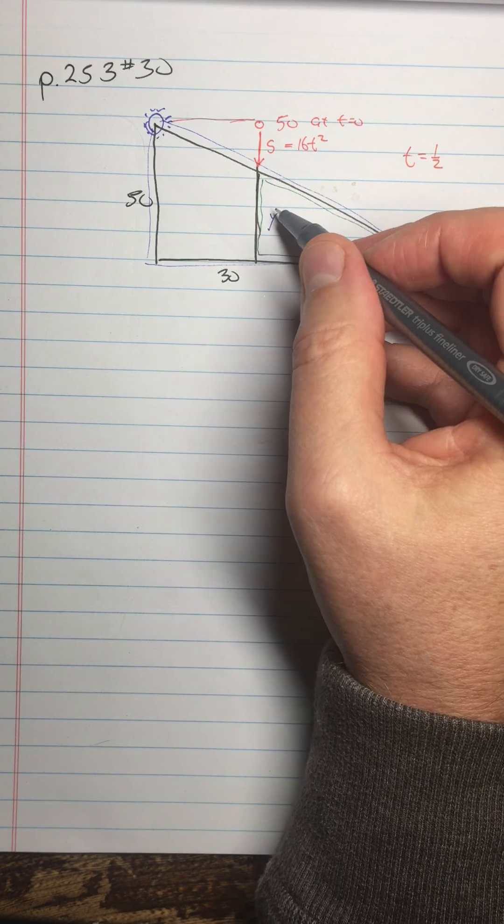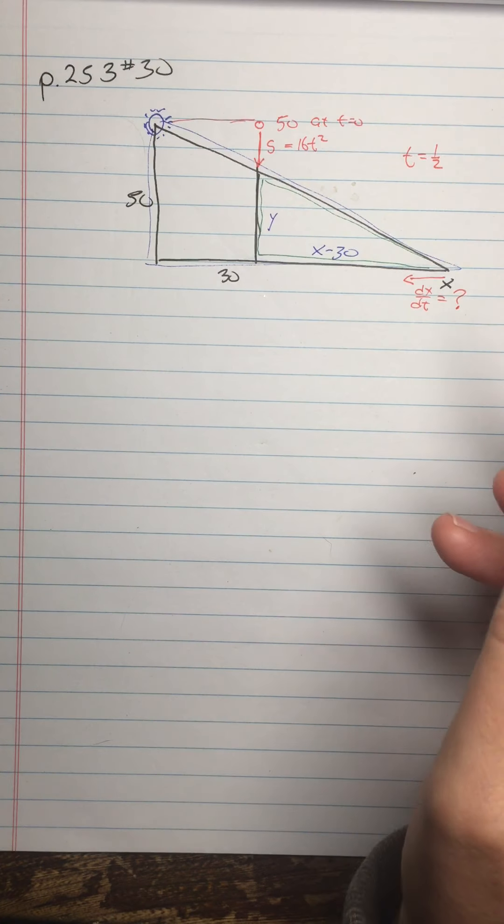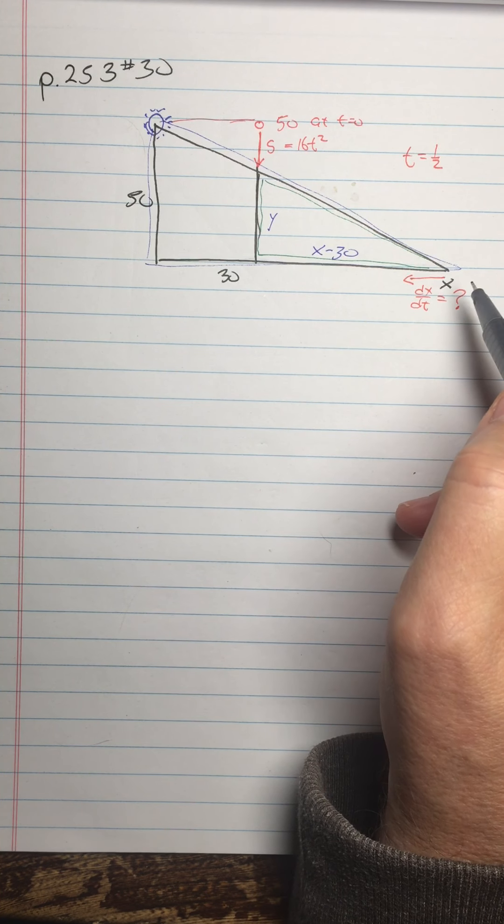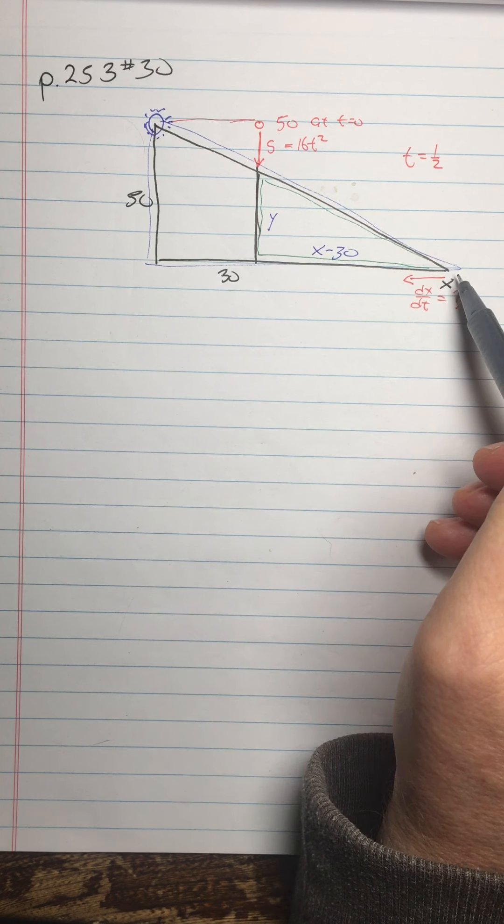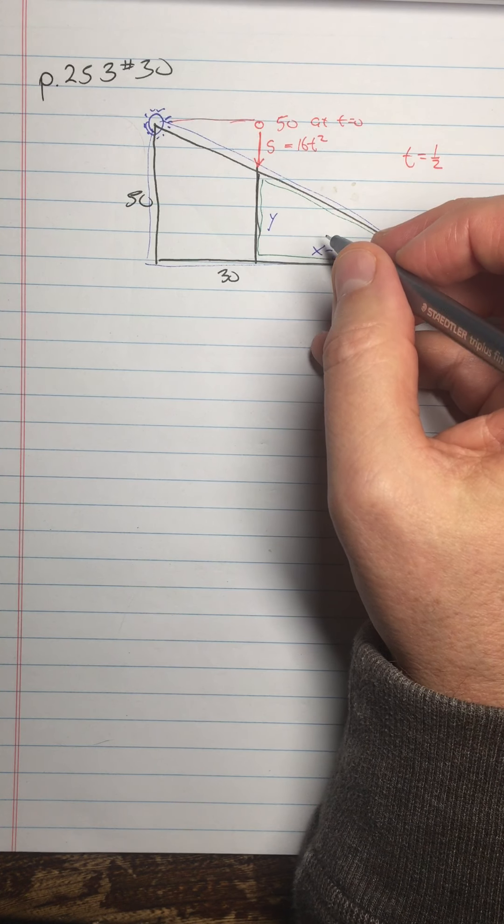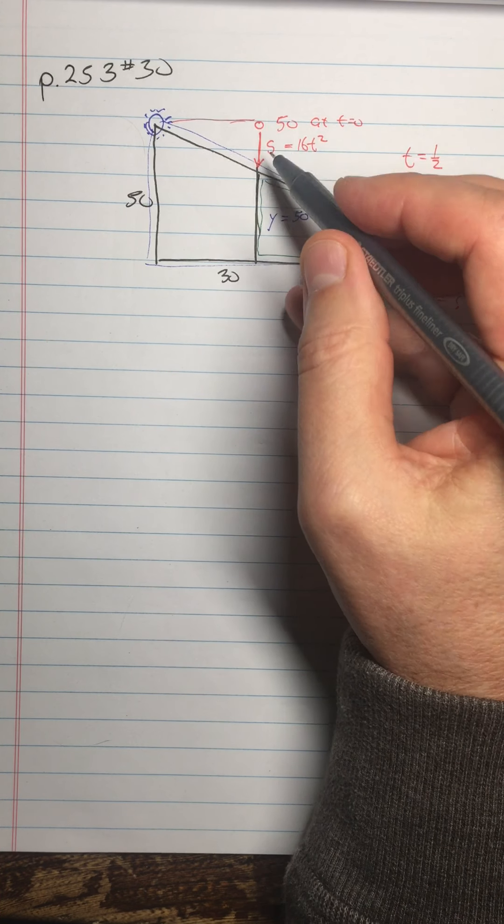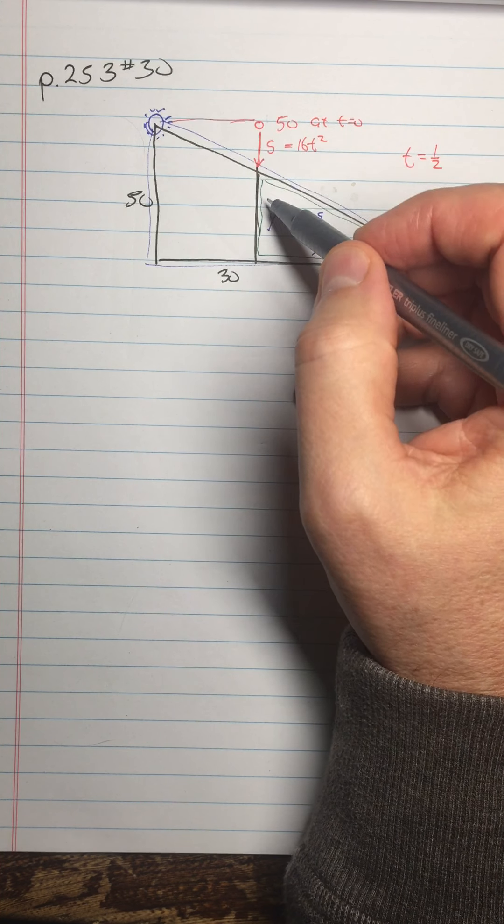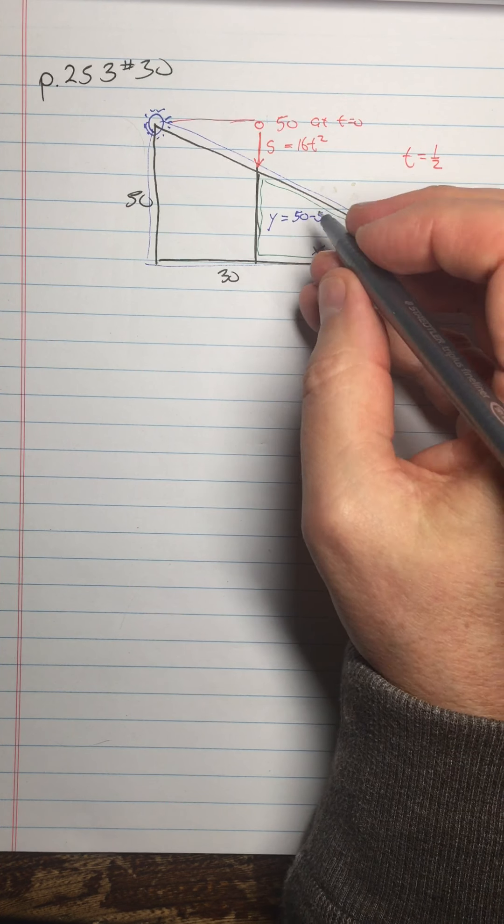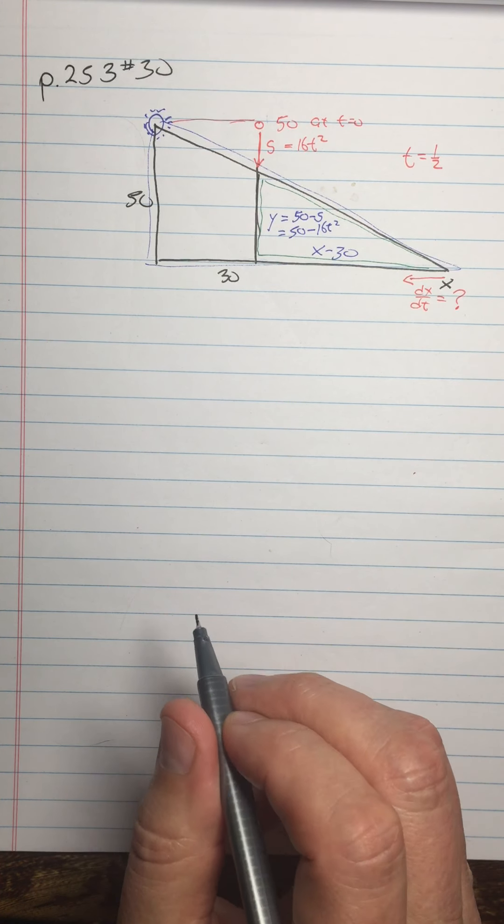But before I do this, I might realize how the y is related to the s. Because, right, I know, I'm going to be able to find ds dt, and the variables that I need to relate here are s and x. So how is y related to t? That's what I need to look at. So if y is 50 minus s, right, the total distance is 50, and if I subtract s from 50, I'm going to get y. And s is 16t squared, so y is 50 minus 16t squared.